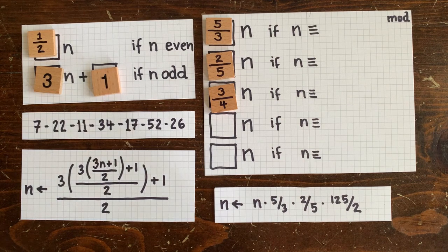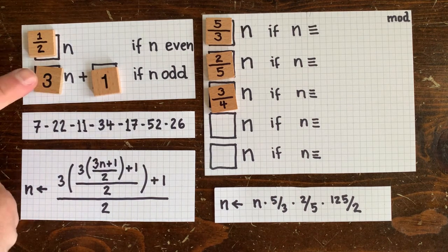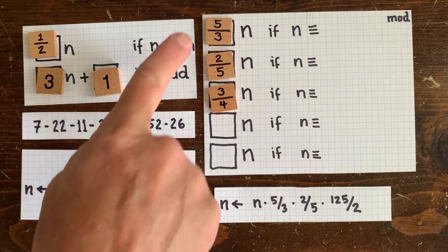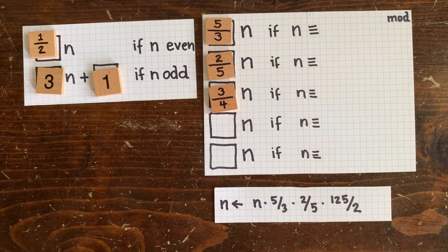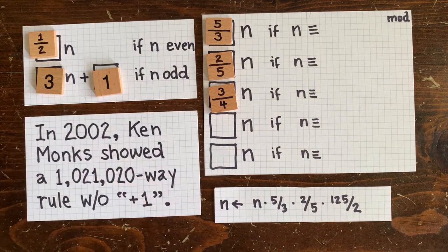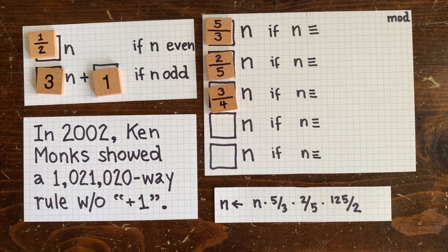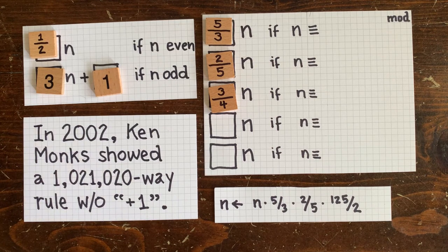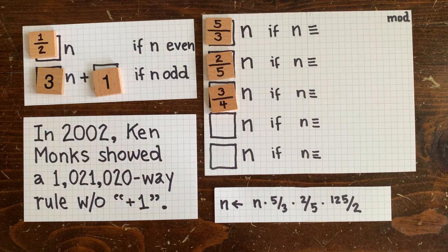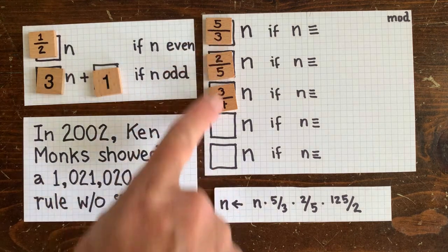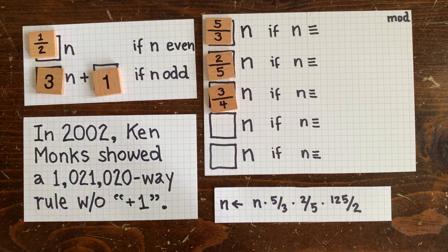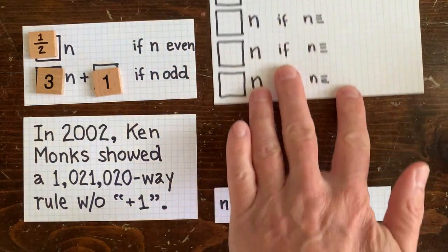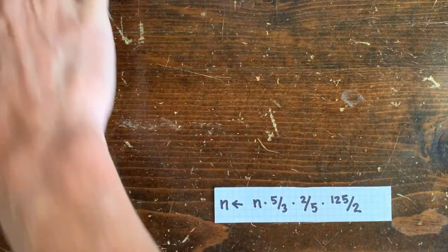So, our one-half n is already in the right format. But how can we implement 3n plus 1 as a series of multiplications? That seems impossible. But in 2002, mathematician Ken Monks wrote a paper called 3n plus 1 minus the plus 1, where he showed a 1 million condition rule that mimics the 3n plus 1 rule without any plus 1s. So that was really cool. And in this episode, I want to see if we can make a smaller rule that does the same thing and walk through how to do it.